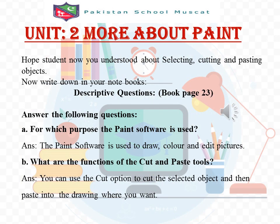I hope students now you all have understood about selecting, cutting, and pasting objects. Now you have to write down in your notebooks descriptive questions from book page number 23, Part A and B. Question Part A: for which purpose is the Paint software used? Answer: the Paint software is used to draw, color, and edit pictures. Question Part B: what are the functions of the cut and paste tools? Answer: you can use the cut option to cut the selected object and then paste it into the drawing where you want.